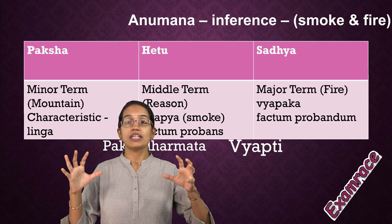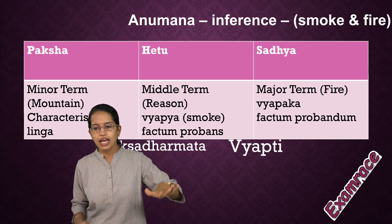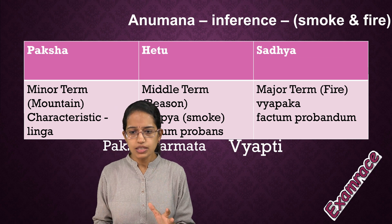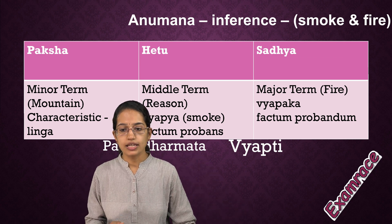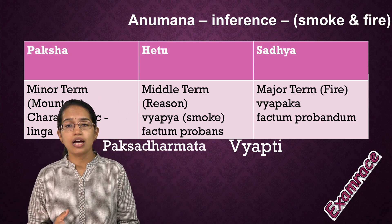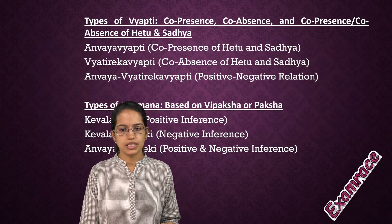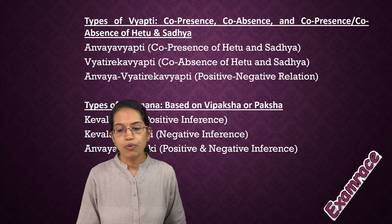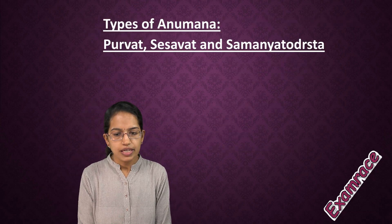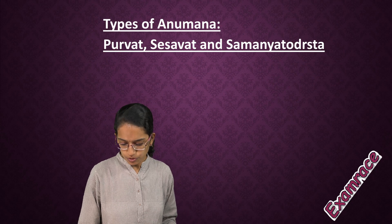That diagram itself explains lots of things — many concepts under one roof. We already talked about Paksha; the characteristics of Paksha are known as Linga. We talked about Hetu and Sadhya. Then you have Drishtanta — that is the example given — and Pakshadharmataa, which is the special feature of the subject. Types of Vyapti and types of Anumana are important questions that could be part of your examination. We have Purvavat, Sheshavat, and Samanyatodrishta — those are the types of Anumana.